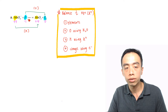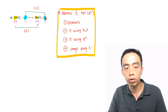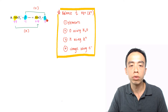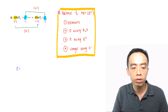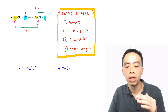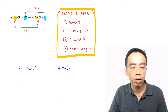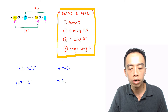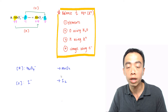Then I- has a -1 oxidation state going to I2 which is 0, so there's an increase in oxidation state from -1 to 0. So I can split this into two half equations: my reduction half equation MnO4- to MnO2, and my oxidation half equation I- to I2.